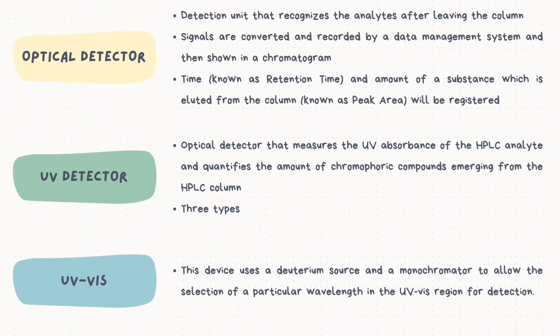We will be using HPLC with a UV-VIS absorbance detector to analyze the beta-lain pigment in red beets. Optical detectors are important equipment and most HPLC instruments are equipped with one — they detect analytes after leaving the column, and signals are converted and recorded by a data management system, shown in a chromatogram. The detector registers retention time and peak area. A UV detector measures the UV absorbance of the HPLC analyte, using a deuterium source and a monochromator to select a particular wavelength in the UV region.